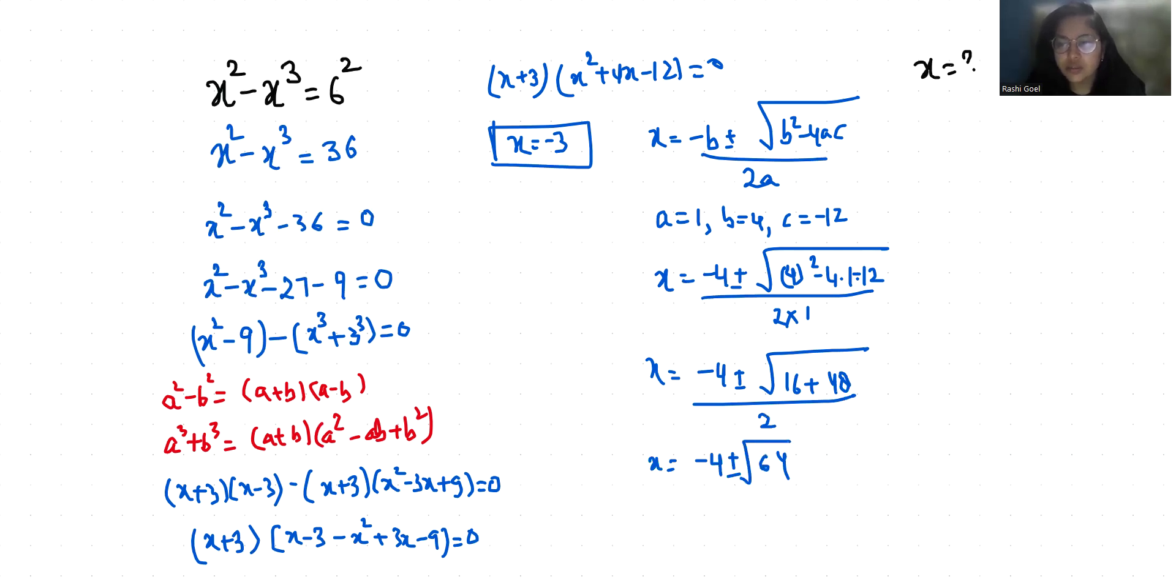So x equals minus 4 plus minus 8 by 2. So x equals minus 4 plus 8 by 2 and minus 4 minus 8 by 2.